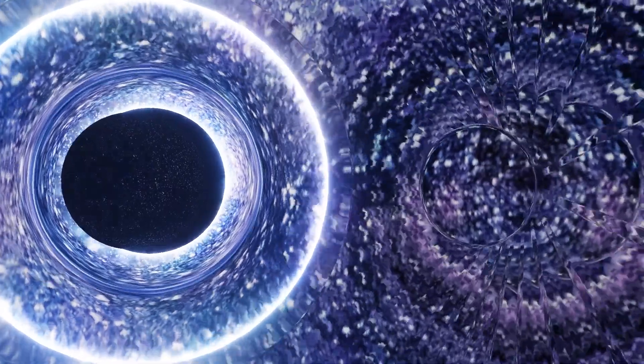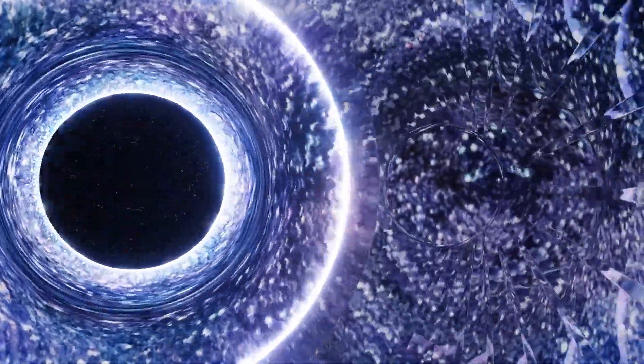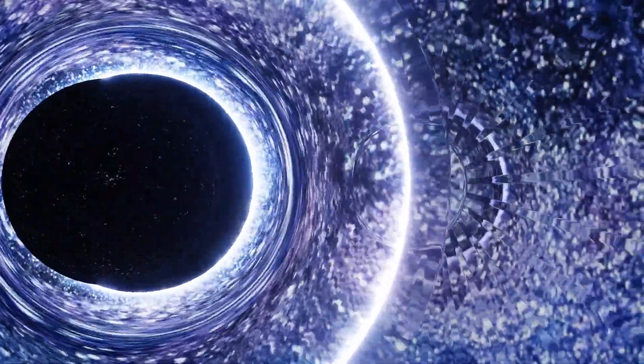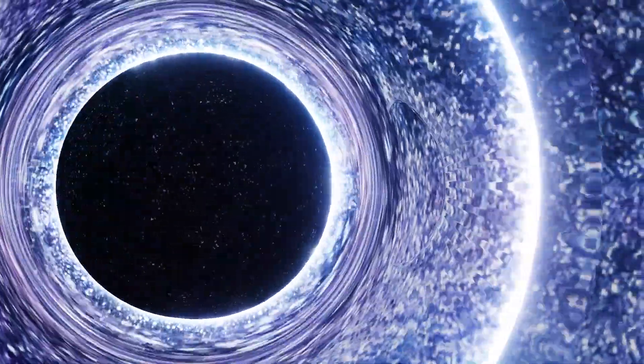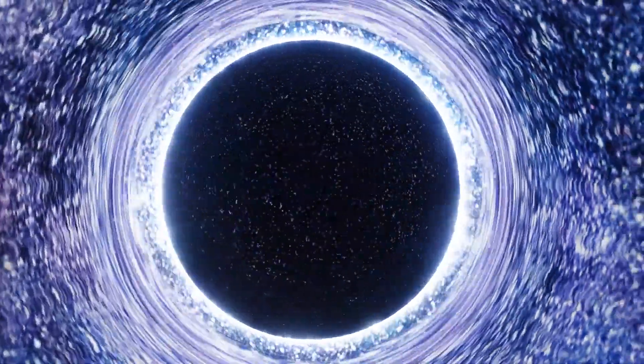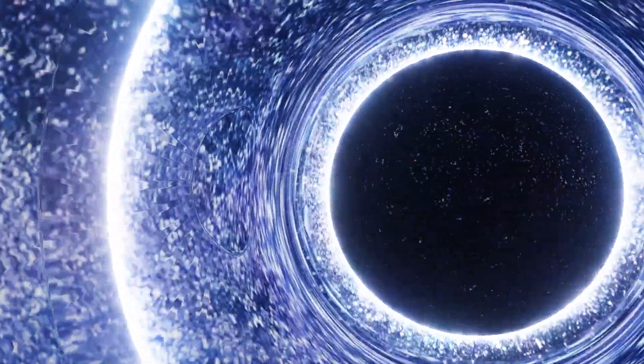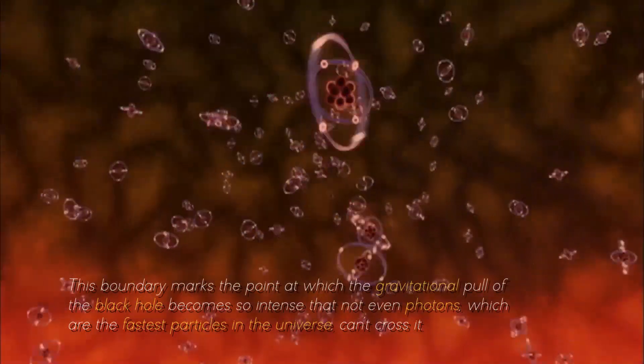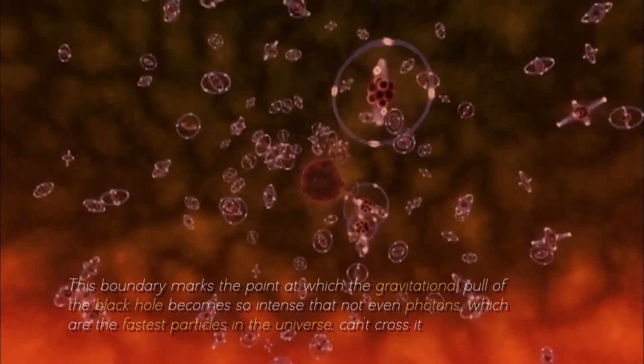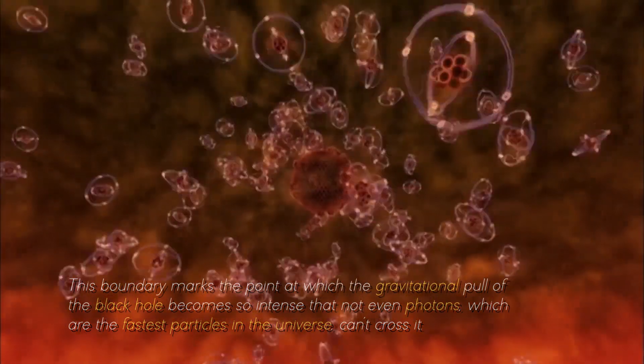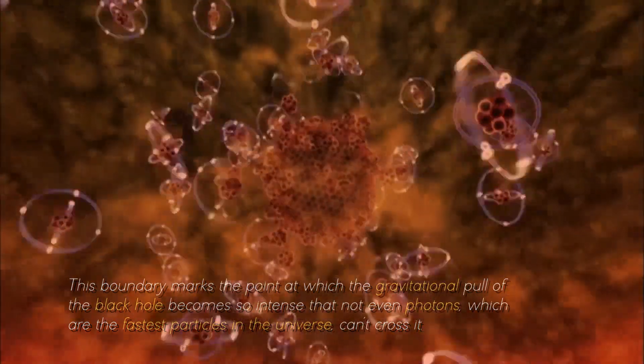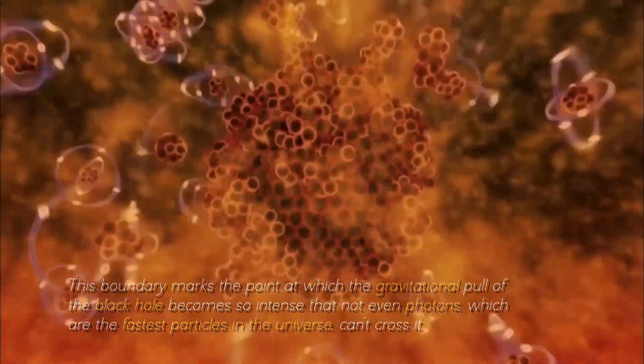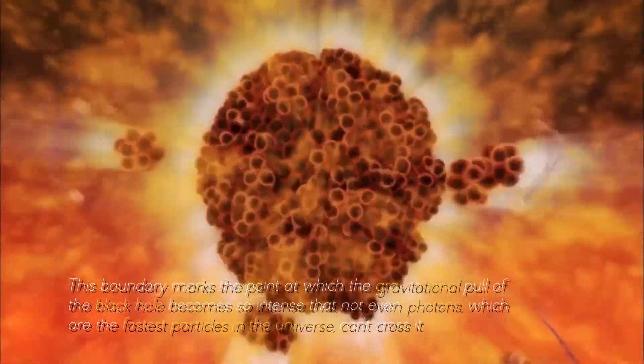This finding challenges the conventional understanding of how black holes work. A fundamental characteristic of a black hole is its event horizon, an invisible boundary beyond which escape becomes impossible, even for light. This boundary marks the point at which the gravitational pull of the black hole becomes so intense that not even photons, which are the fastest particles in the universe, can cross it.